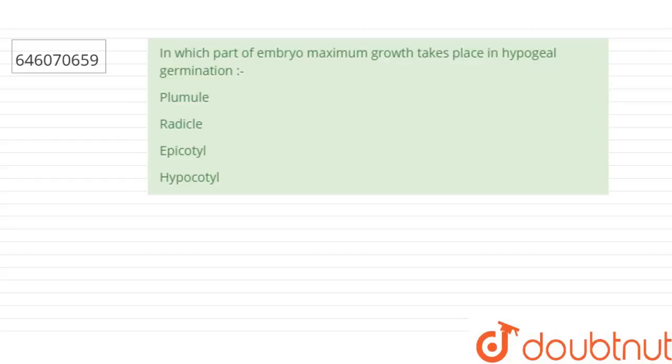The question asks: In which part of the embryo does maximum growth take place in hypogeal germination? The options are plumule, radicle, epicotyl, and hypocotyl.